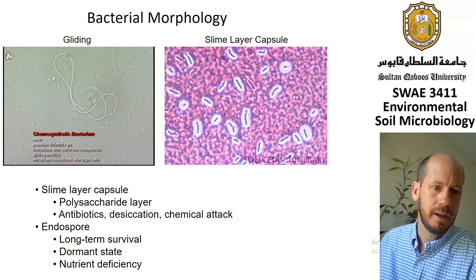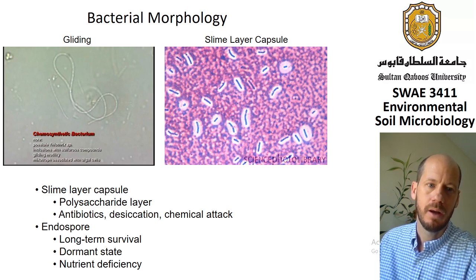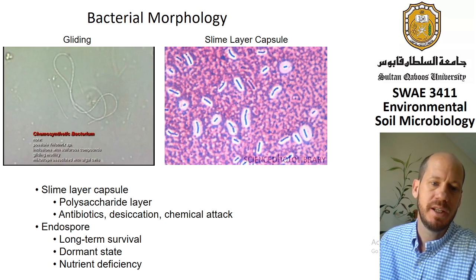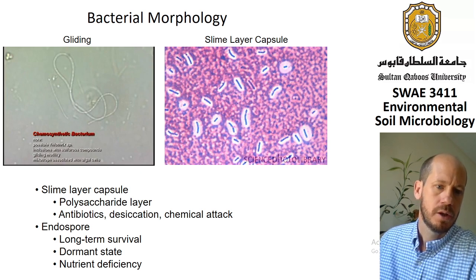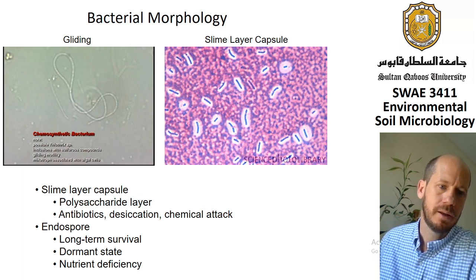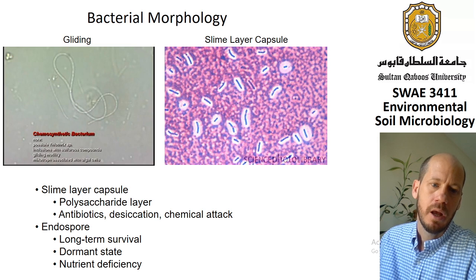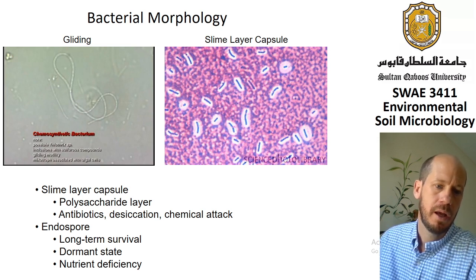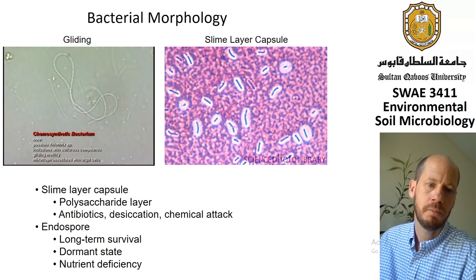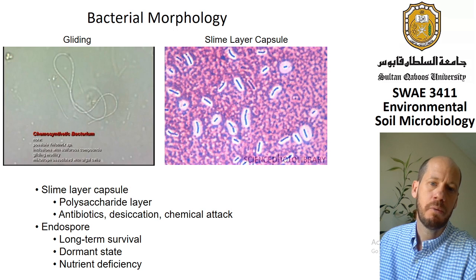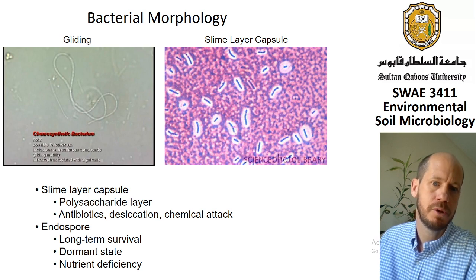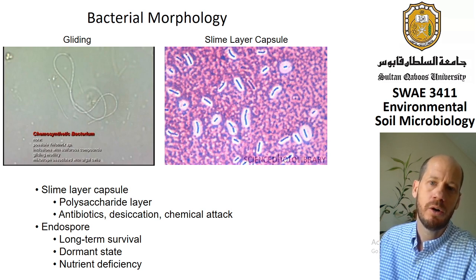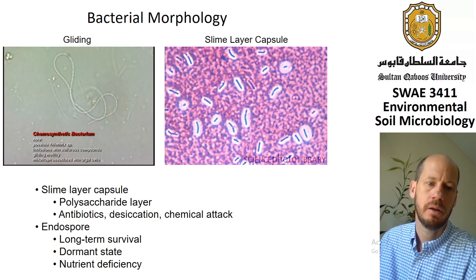Bacteria can also make resistant structures called endospores. Endospores help bacteria with long-term survival and becoming dormant. Bacteria able to make endospores, like Bacillus and actinomycetes, are able to withstand high temperature and drought by becoming dormant — they encapsulate themselves and start reproducing again when conditions are right.